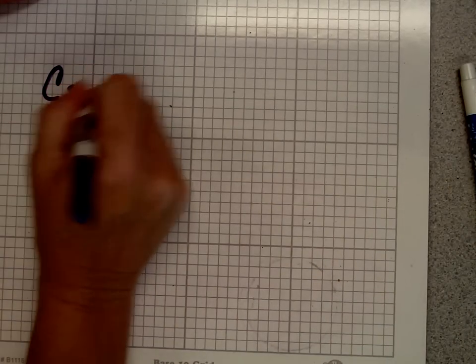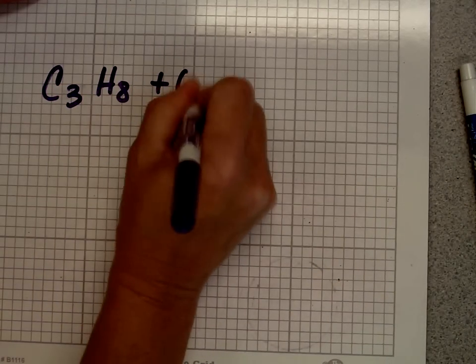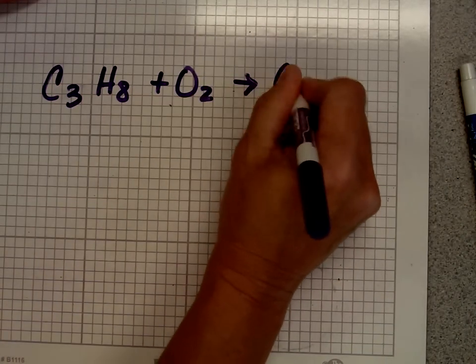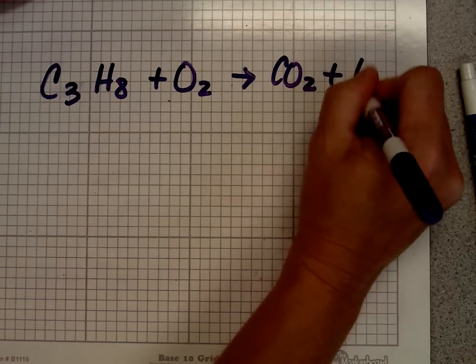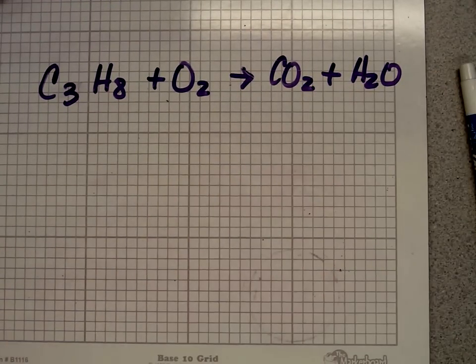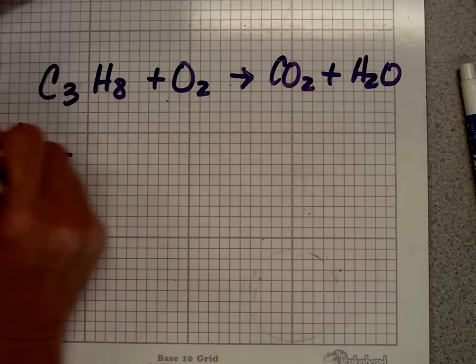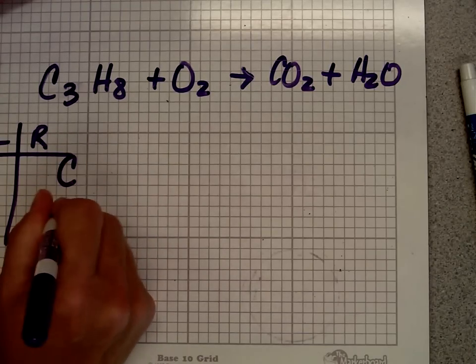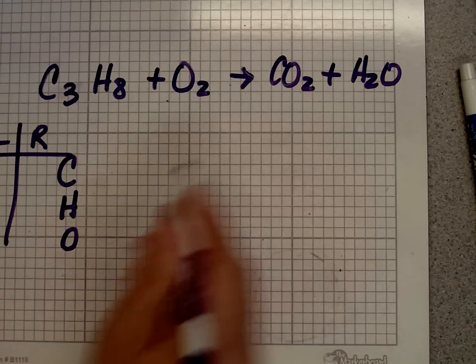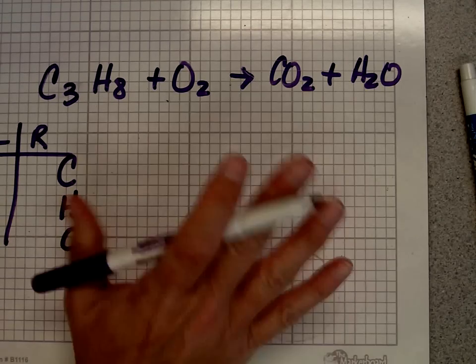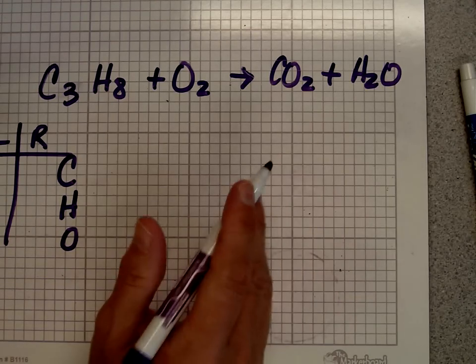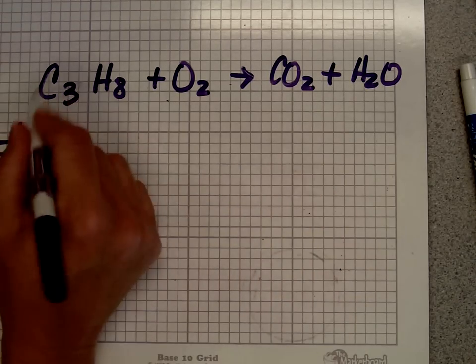Now, let's do a combustion reaction. We have C3H8 plus O2 reacts to form CO2 plus H2O. All right. And as you know, that is a combustion reaction. It looks pretty easy. I have carbon, hydrogen, and oxygen. I have the same on the right. Now, I don't have any polyatomic ions on this, so I'm just going to leave it the way it is.